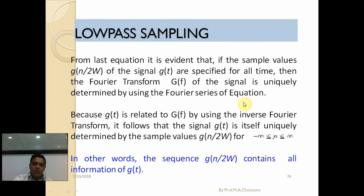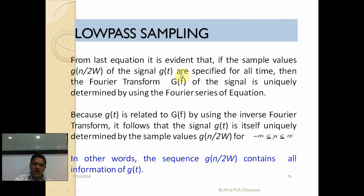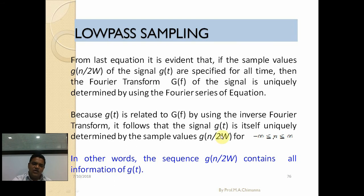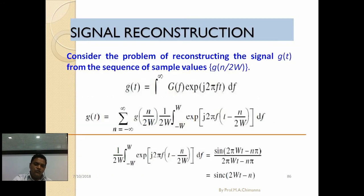It is evident that if the sample values g(n/2W) of the signal g(t) are known for all time, then the Fourier transform G(f) is uniquely determined by using the Fourier series equation. Because g(t) is related to G(f) by the inverse Fourier transform, it follows that g(t) itself is uniquely determined by the sample values. In other words, the sequence g(n/2W) contains all the information of g(t).